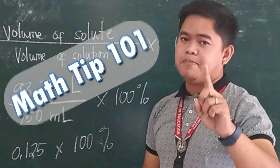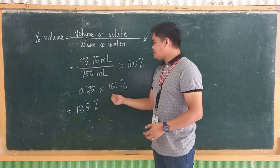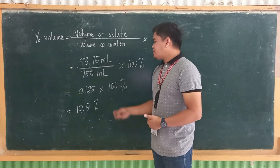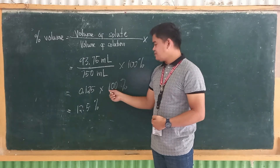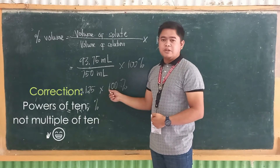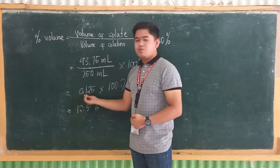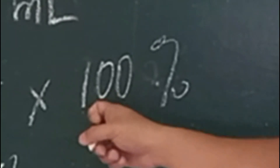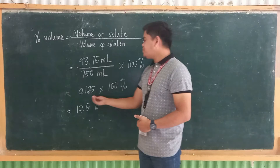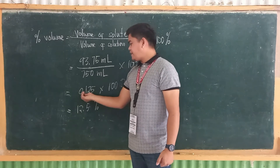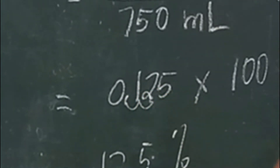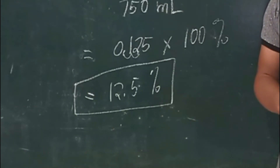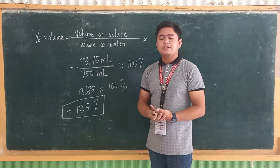Quick tip: if you're multiplying by multiples of 10 — like 10, 100, 1000, 10,000, and so on — just count the number of zeros of your multiple of 10, then move your decimal point to the right according to how many zeros you have. For example, we have 100, which has two zeros, so we move the decimal point two places to the right. Therefore, our answer is 12.5%. So there is 12.5% of ethanol in a 750 ml bottle of wine.